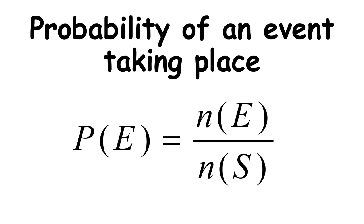The probability of an event taking place is symbolized in this manner. P of E is equal to the number of events divided by the number of sample space. We are going to define each term later as we go on through the lesson.